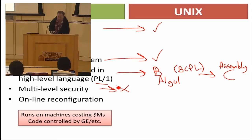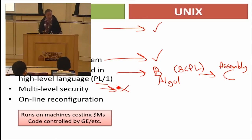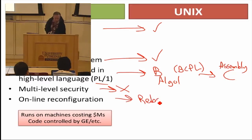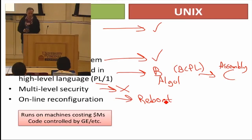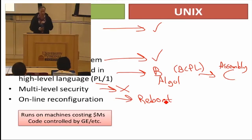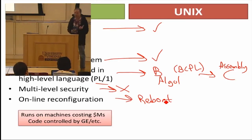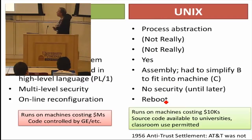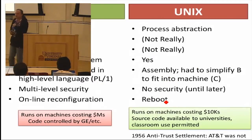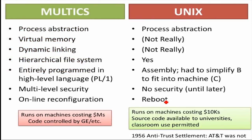They didn't have any security — this was for them to play around and play games on, so it didn't seem important. And since they really didn't care too much about online reconfiguration, you just had to reboot if you wanted to change anything. So this is what they ended up producing as Unix, and it had this great property that you could run it on a machine costing a few tens of thousands of dollars instead of needing tens of millions of dollars.